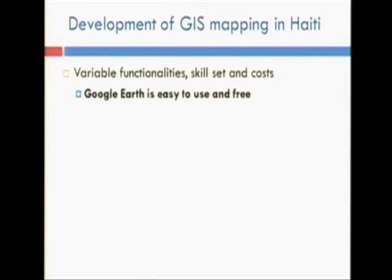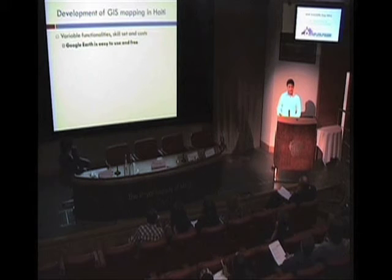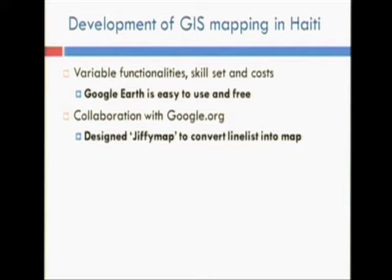All the previous maps I showed were done retrospectively. GIS — geographical information systems — can be quite complex, so the Haiti field team decided to use Google tools because it's easy and also free. They set up a collaboration with Google.org, the non-profit arm of Google, to convert line lists into maps. Google developed a software called Jiffy Map for that purpose.